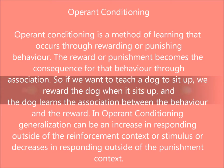Operant conditioning is a method of learning that occurs through rewarding or punishing behaviour. The reward or punishment becomes the consequence for that behaviour through association. So if we want to teach a dog to sit up, we reward the dog when it sits up, and the dog learns the association between the behaviour and the reward.